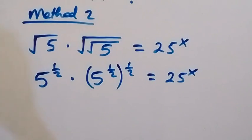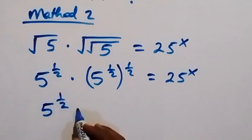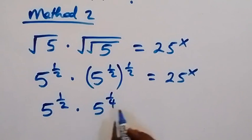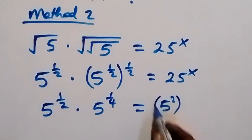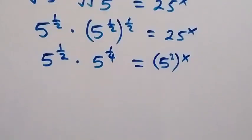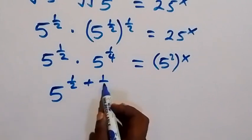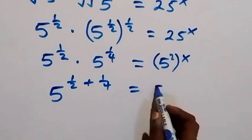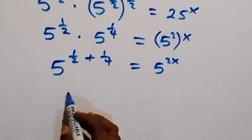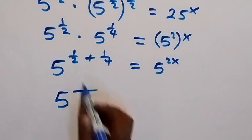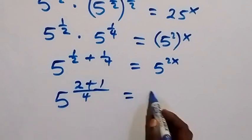In the next step we multiply the powers. We have 5 raised to power one-half multiplied by 5 raised to power one-quarter, which we can also write as 5 squared raised to power x. Bringing this part together, we have 5 raised to power one-half plus one-quarter. Taking these fractions together: 2 goes into 4 twice, giving 2, plus 1 over 4 gives 1, equaling 5 raised to power 2x.